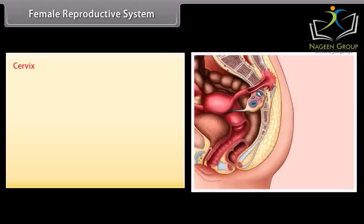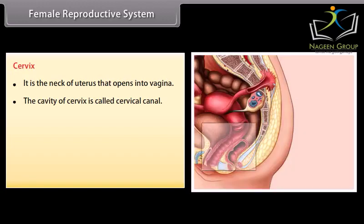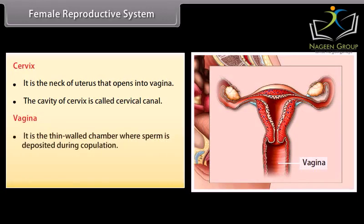The cervix is the neck of the uterus that opens into the vagina. The cavity of the cervix is called the cervical canal. The vagina is the thin-walled chamber where sperm is deposited during copulation. Along with the cervical canal, the vagina forms the birth canal.